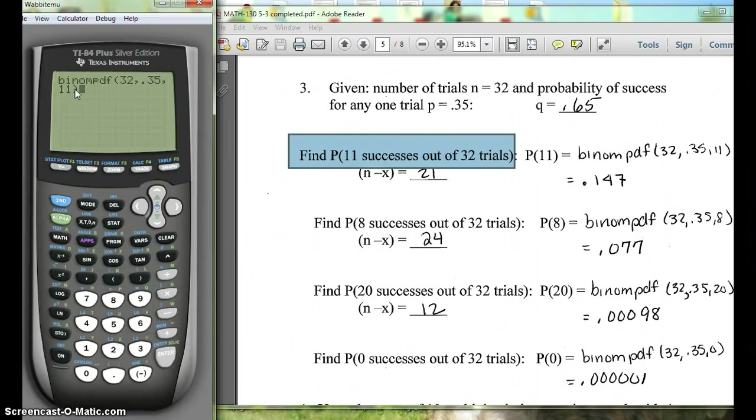And it's important that you put it in that order: N, P, X. And you can remember which order they're in because that's alphabetical for N, P, X. Then you'll hit enter and you'll see here, if we round to three decimal places, we get 0.147.